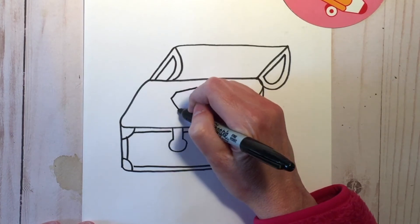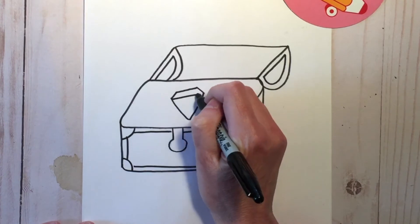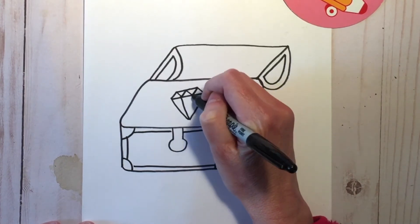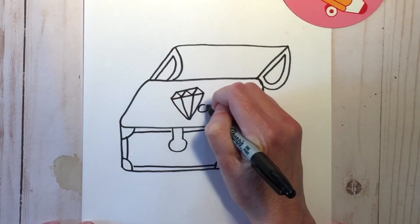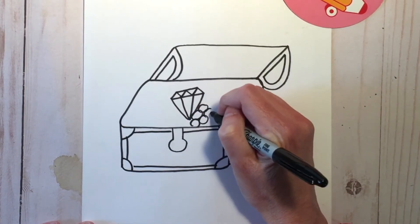So I'm going to start with a giant diamond. But really you guys can add whatever you want to your treasure chest. You can add a full of candy, jewels, money. I'm going to put some coins.